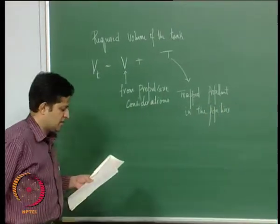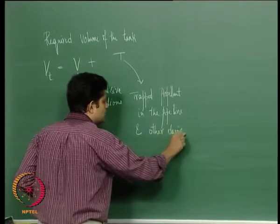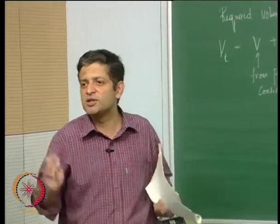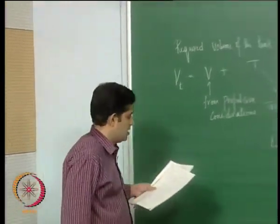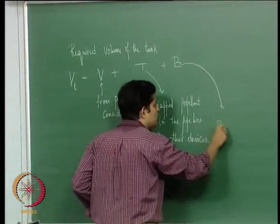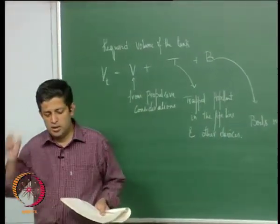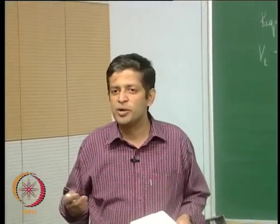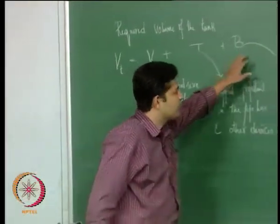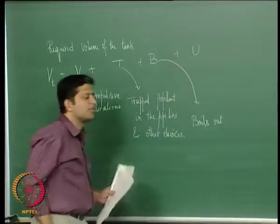Trapped propellant exists in the pipeline and also in devices. Even in the tank you will not be able to expel out all the propellant — there will be a small fraction of it that will be left unexpelled. Then a certain portion of the propellant boils out. Depending on whether it is a cryogenic propellant, this fraction will be larger because the ambient temperature is much higher than the propellant temperature, so boiling will be higher in a cryogenic propellant. Lastly there is something called ullage volume.